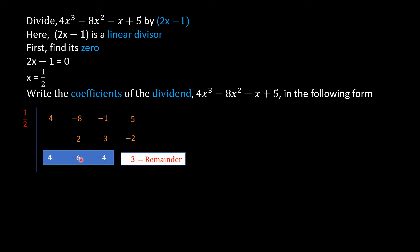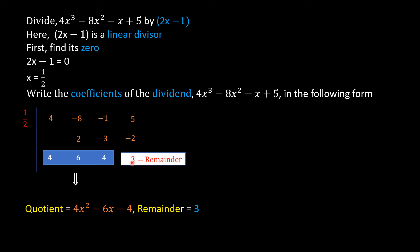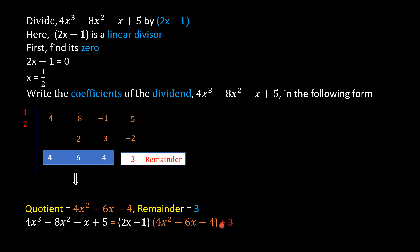With these three coefficients we can write our quotient, which will be a quadratic polynomial: 4x² - 6x - 4, where 4 is the coefficient of x², -6 is the coefficient of x, and -4 is the constant term. Remainder is 3. We write the dividend as (2x - 1)(4x² - 6x - 4) + 3.